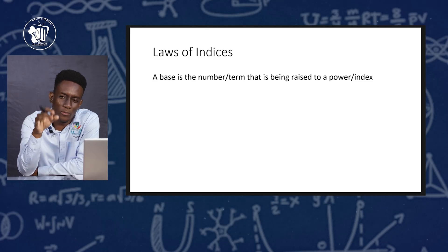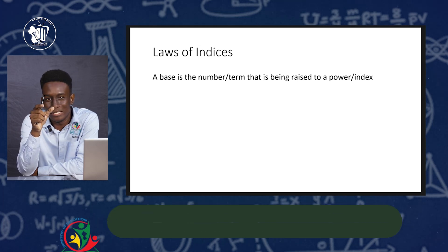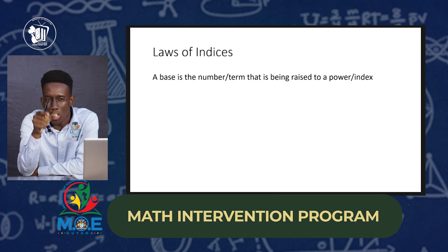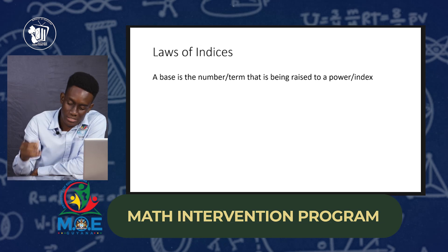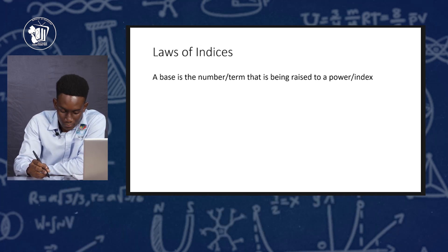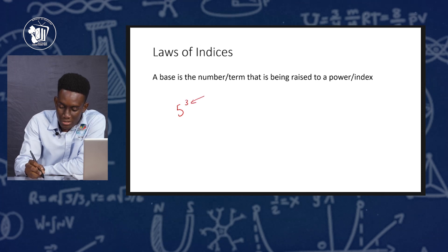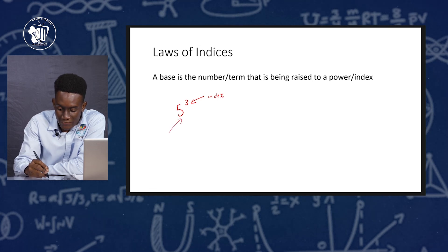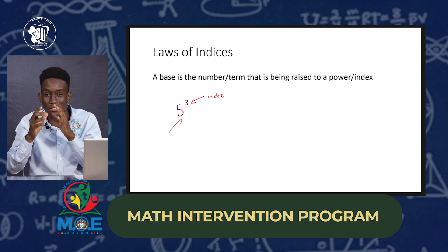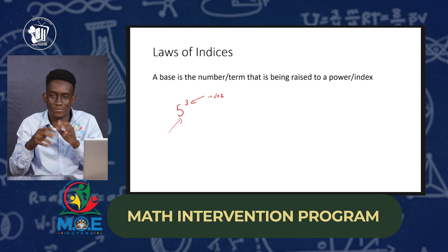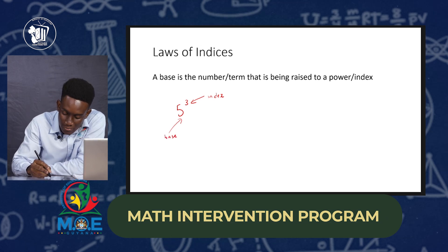So the laws of indices — before we can actually head into these laws, we must be able to identify what is an index and what is the base. We already know to identify the index: the index is a small number at the top. Now let's look at what is the base. Let's say we have the term 5 raised to the third power. We already know the small number at the top is the index. And this 5 that is being raised to the power — that is called the base. The base is the number or term that is being raised to a power.